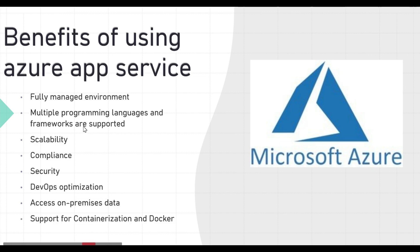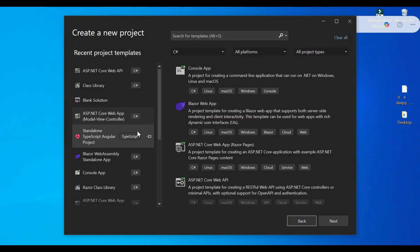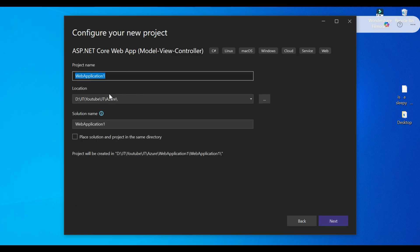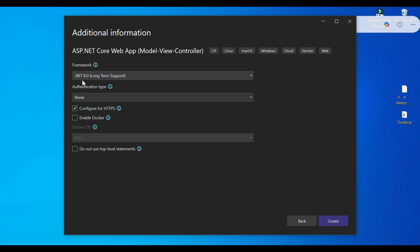With App Service you can still access data on your on-premises servers using hybrid connections and Azure Virtual Networks. You can also host custom Windows or Linux containers in App Service, dockerize your app and host it there, or run multi-container apps with Docker Compose. We'll discuss more about Docker and Kubernetes in upcoming videos. Now that you have some ideas about what Azure App Service is and its benefits, let's flip to Visual Studio and create a .NET Core application to host.